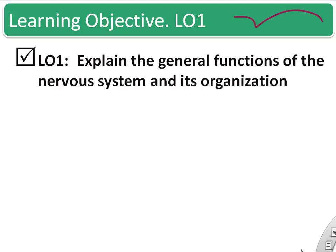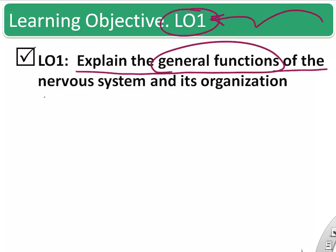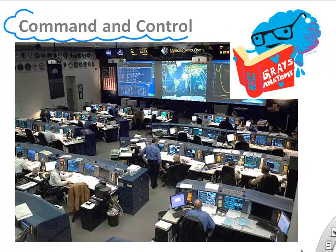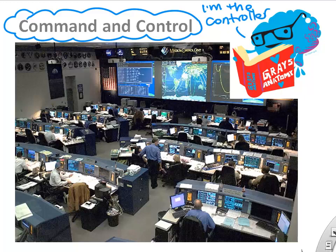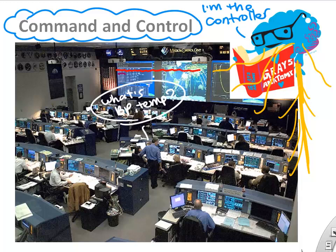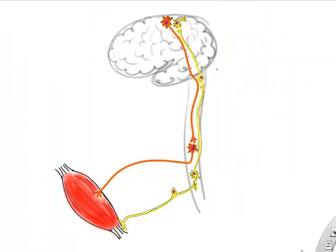The first learning objective is to explain the general functions and organization of the nervous system. The nervous system is all about command and control of the body, and the brain is the ultimate controller. The brain receives and sends signals through the spinal cord, spinal nerves, and cranial nerves, and makes decisions about things like blood pressure and temperature to maintain homeostasis.